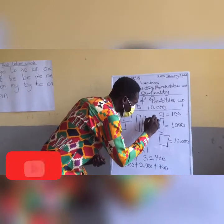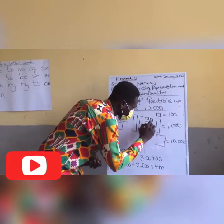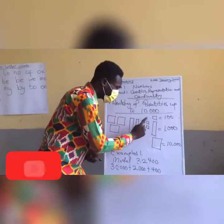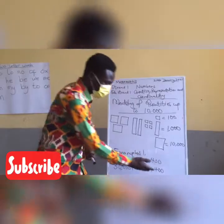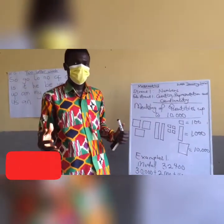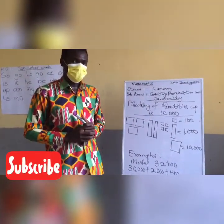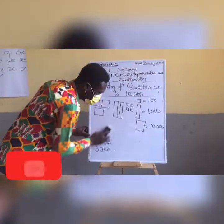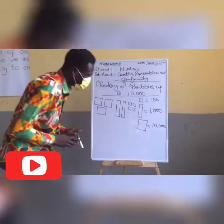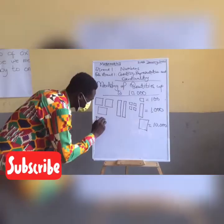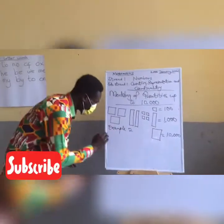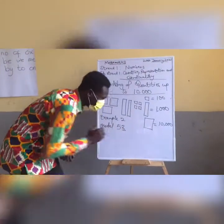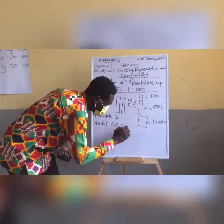We draw our four blocks. One block is 100, so: 100, 200, 300, and 400. This is how we model any given quantity. Let's look at example 2, then try our own example.